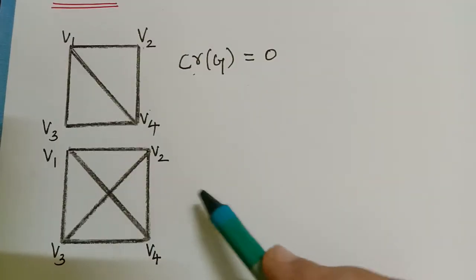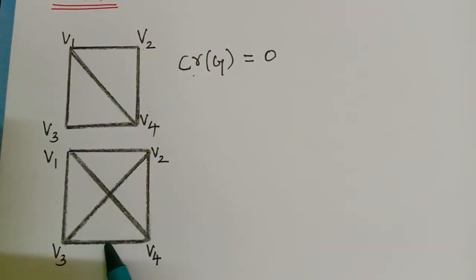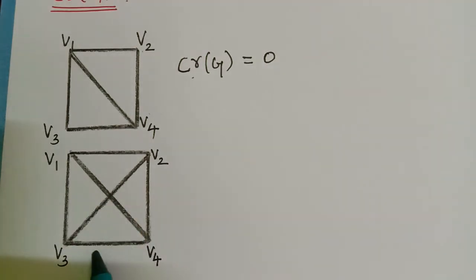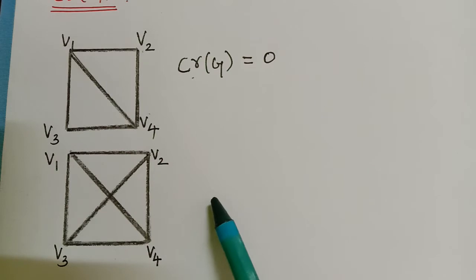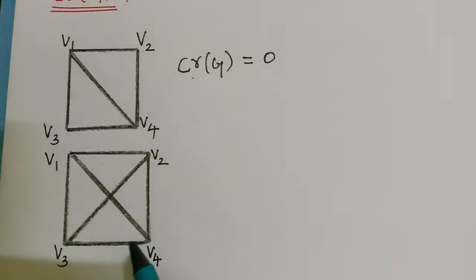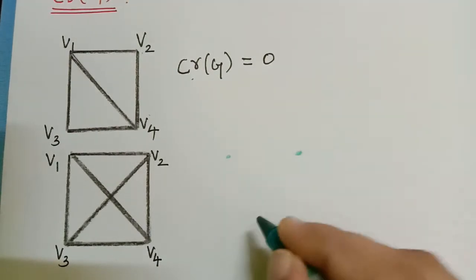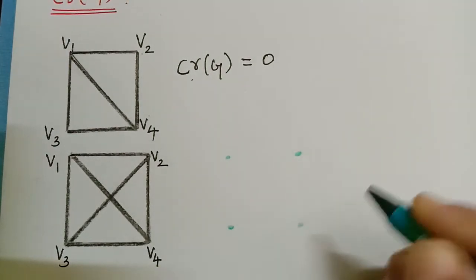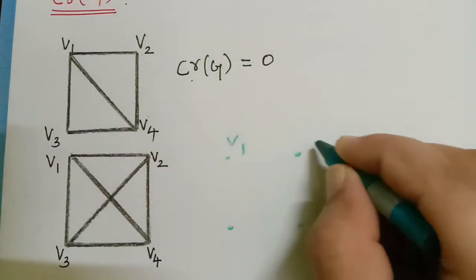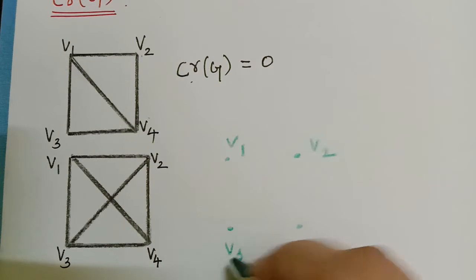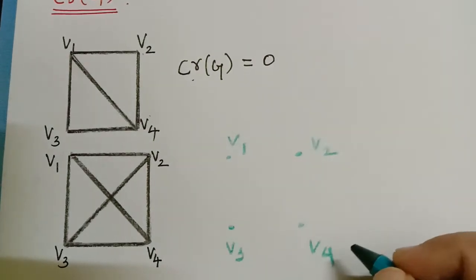Now we shall find the crossing number of this non-planar graph. Generally when we see, there is one crossing for this graph. What we have to do is draw this graph in the plane in such a way that we can reduce the number of crossings or bring it to 0. Now we have four vertices V1, V2, V3 and V4.